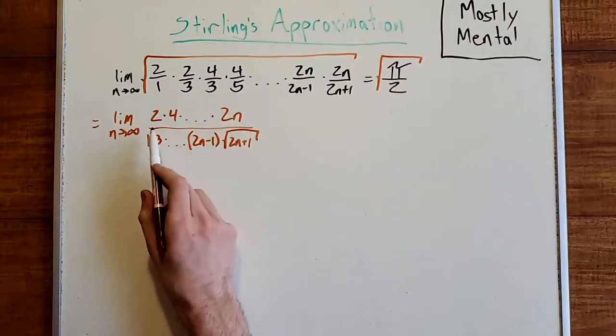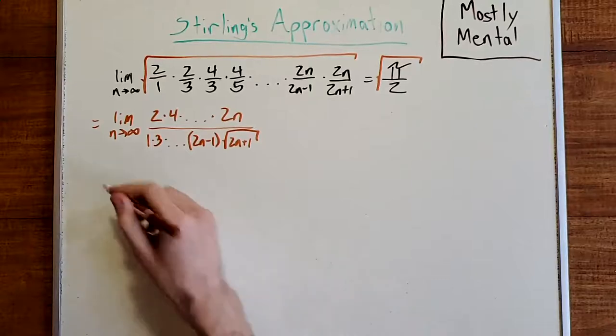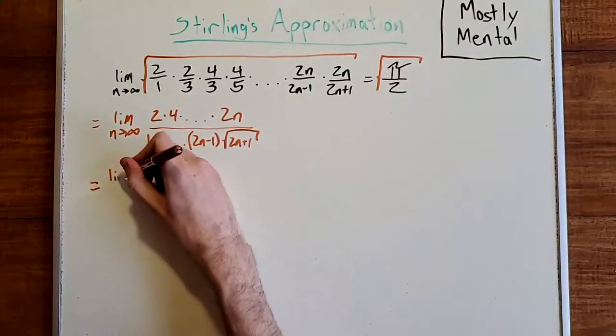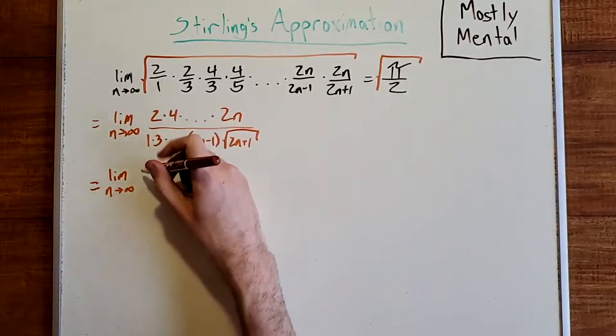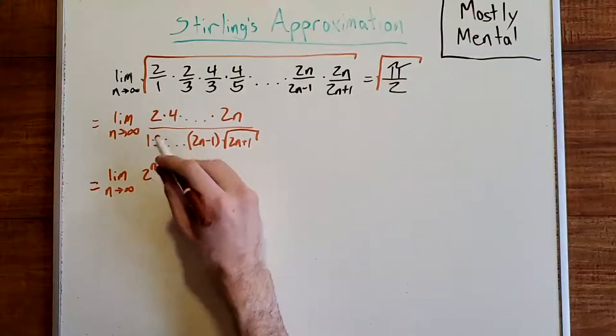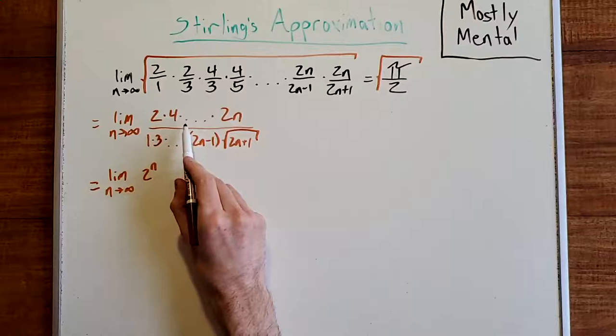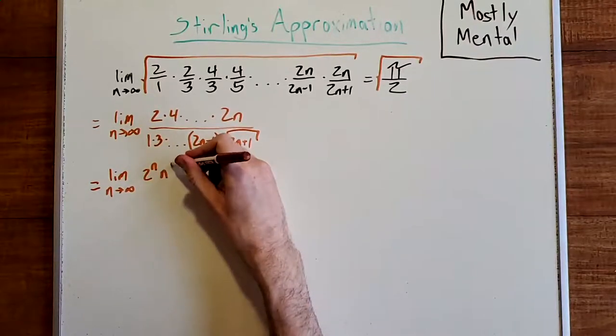Okay, now, both the numerator and denominator are products of lots of terms, and they both look a bit like factorials. And every term in our numerator is even, so we can factor out a 2 from each of them. And there are n of them, so that gives us 2 to the n. And then we're left with 1 times 2 times 3 and so on up to n, which is n factorial.